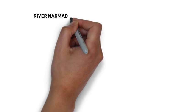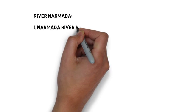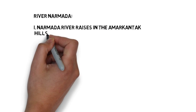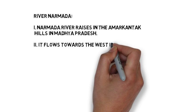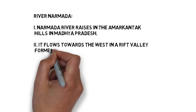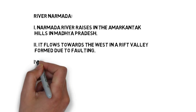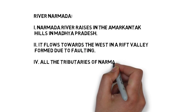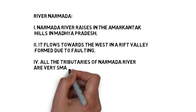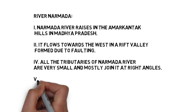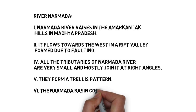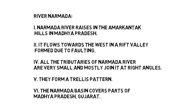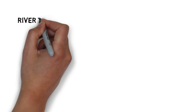Now let us come to the two west-flowing rivers: Narmada and Tapi. The Narmada originates on the western flank of the Amarkantak Plateau at a height of about 1,057 meters. Flowing through a rift valley between the Satpura range in the south and the Vindhya range in the north, it forms a very beautiful gorge in the marble rocks and two waterfalls near Jabalpur. The Sardar Sarovar Dam is also built on this river.